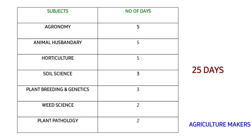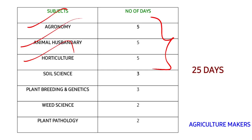First, I have covered the most important topics and also the topics which have a large amount of content to cover — these are agronomy, animal husbandry, and horticulture. They are the most important topics and will also require a significant amount of time to cover their contents, so I have allocated five days each to agronomy, animal husbandry, and horticulture.